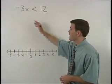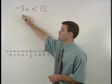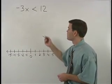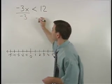In this problem, since x is being multiplied by negative 3 on the left side of the inequality, to get x by itself, we divide both sides by negative 3.